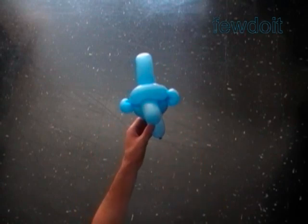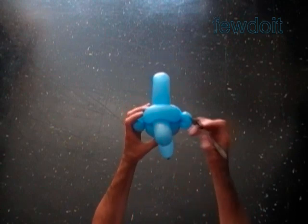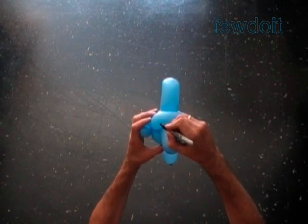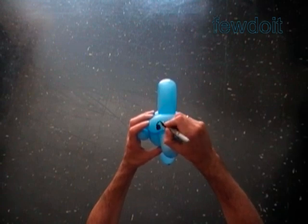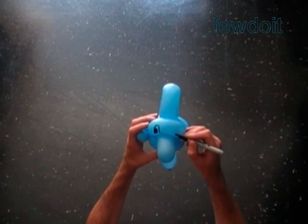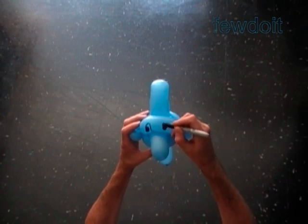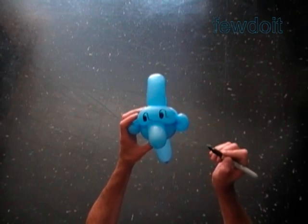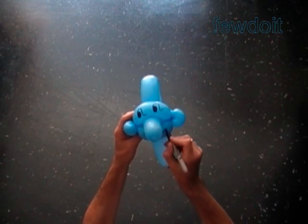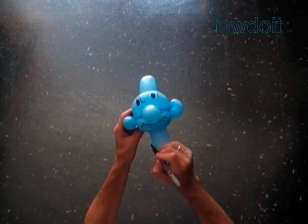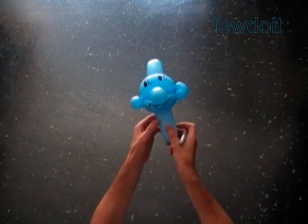And now we are going to use the permanent black marker to draw the face. Here are the eyes, something kind and nice. Big smile. Here we made nice looking face.